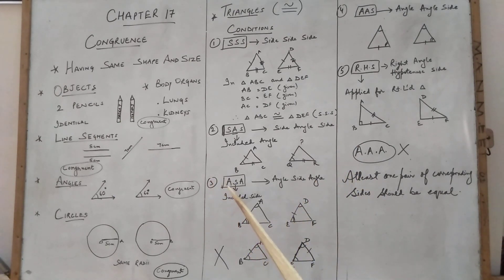Third condition is ASA. A angle, S side, A angle. Again side is included here. Means side is between the two angles. Angle, side, angle. Angle, side, angle. This is correct if you do like this.